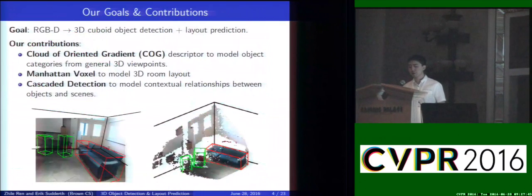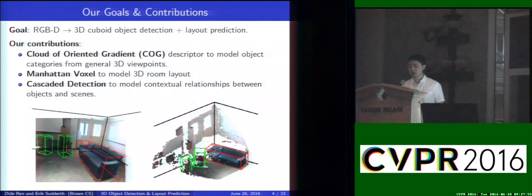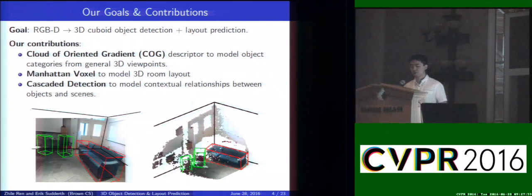Our goal as a project is to start from a single RGB image and predict the 3D object detection and layout prediction together. We use cloud-oriented gradients to model the objects with different viewpoints, and Manhattan voxel to model 3D room layout. Finally, we use cascaded detection to model the total scene understanding task.